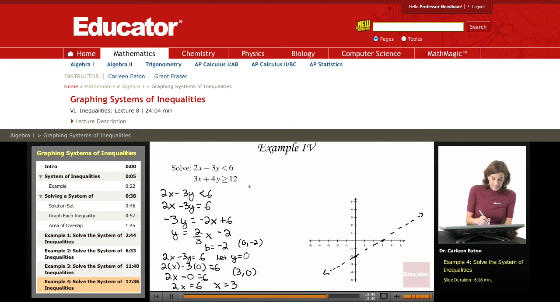For my second inequality, 3x plus 4y is greater than or equal to 12. Again, I'm going to go ahead and put this as a corresponding equation and then find it in slope-intercept form. So 4y equals negative 3x plus 12, or y equals negative 3 fourths x plus 3.